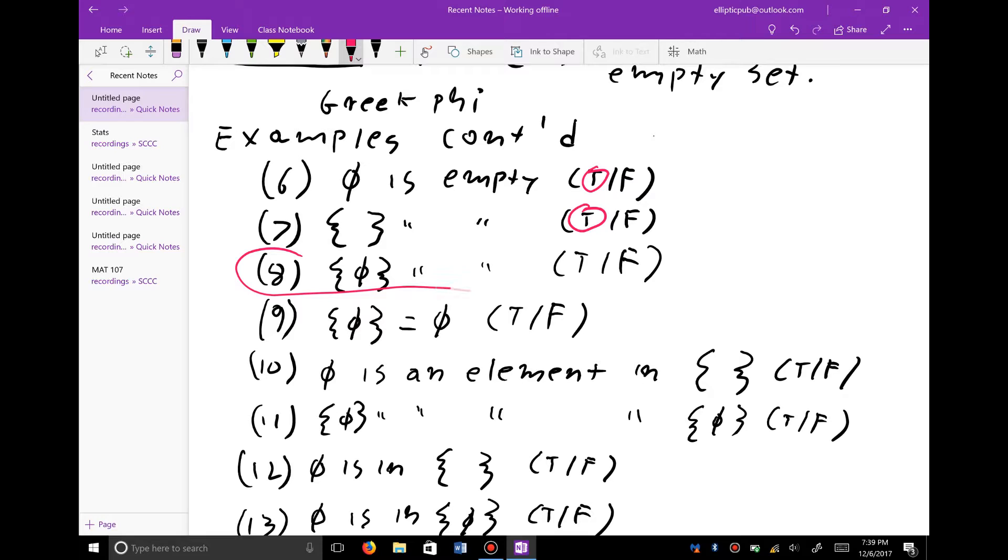But number eight sometimes throws college students. Number eight is saying the set containing the empty set is empty. And this is a set containing the concept of emptiness, but the concept is something which makes it not empty. But one of my previous students, whose name was Ray, came up with a better way to teach this to college students. He said, a folder containing an empty folder is not empty. And I thought, wow, that's the best explanation that I've heard as an analogy for why the set containing the empty set is not empty.